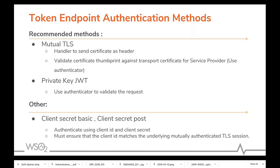Let us take a look at the token endpoint authentication methods. When obtaining an access token, the request has to be valid and issued by a registered user. Mutual TLS and private key JWT are the recommended approaches by the open banking security profile. Apart from that, client secret basic and client secret post are also allowed with some additional validations. If using client secret basic or client secret post, you must ensure that the client ID matches the underlying mutually authenticated TLS session. The WSO2 open banking solution supports mutual TLS, private key JWT, and client secret basic as authentication methods.